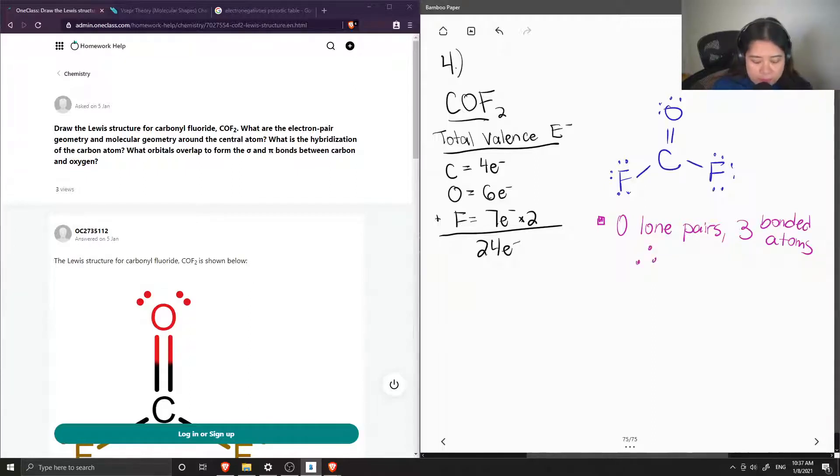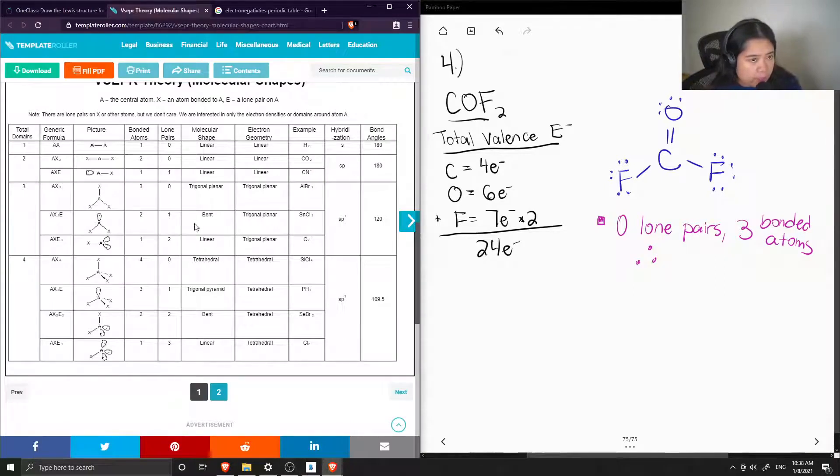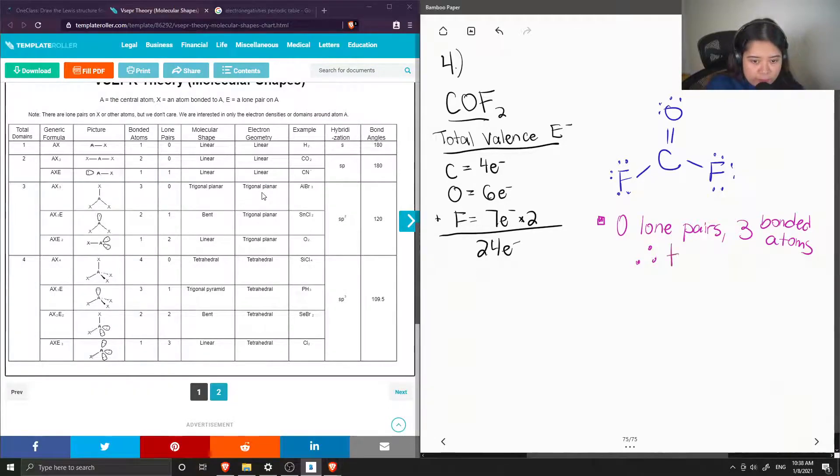So now we would use our VSEPR table to find out the type of electron pair geometry and molecular geometry of the molecule. So when we have zero lone pairs and three bonded atoms, we have both a trigonal planar molecular shape and a trigonal planar electron geometry. So therefore, trigonal planar for both.